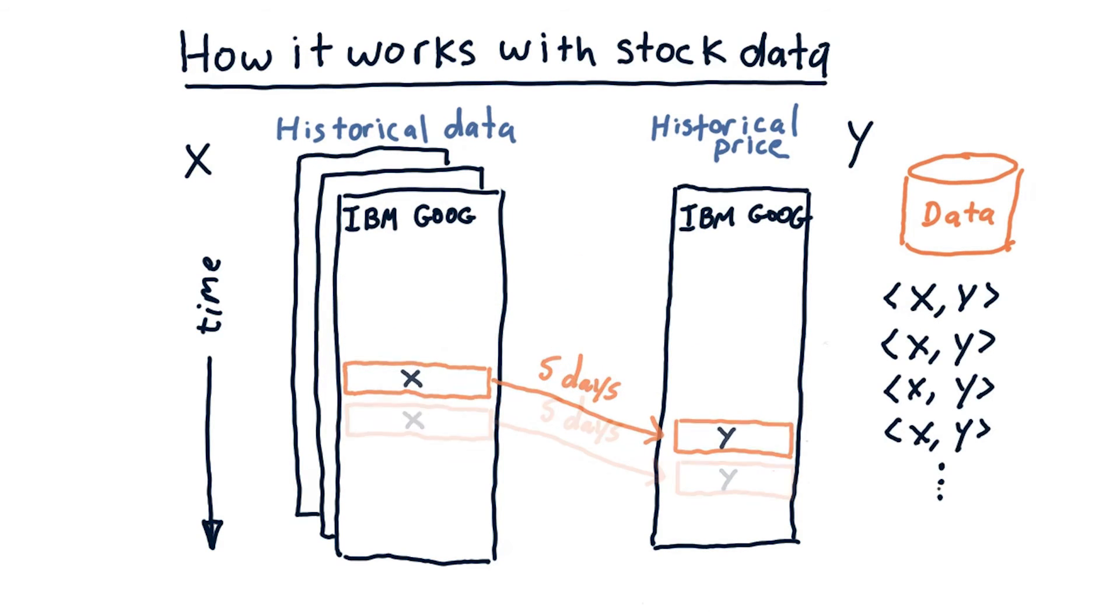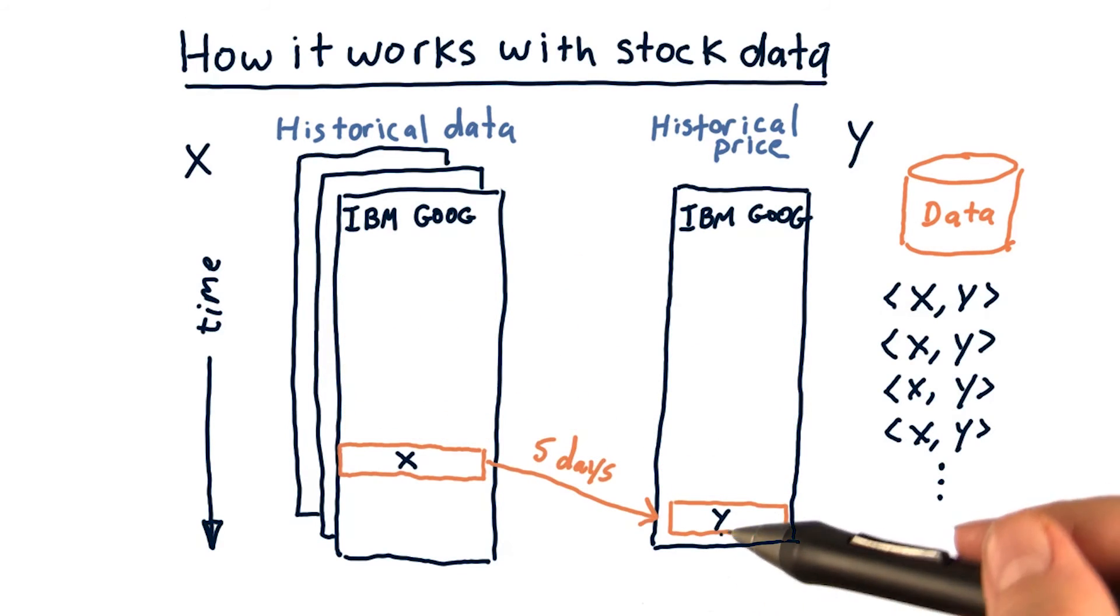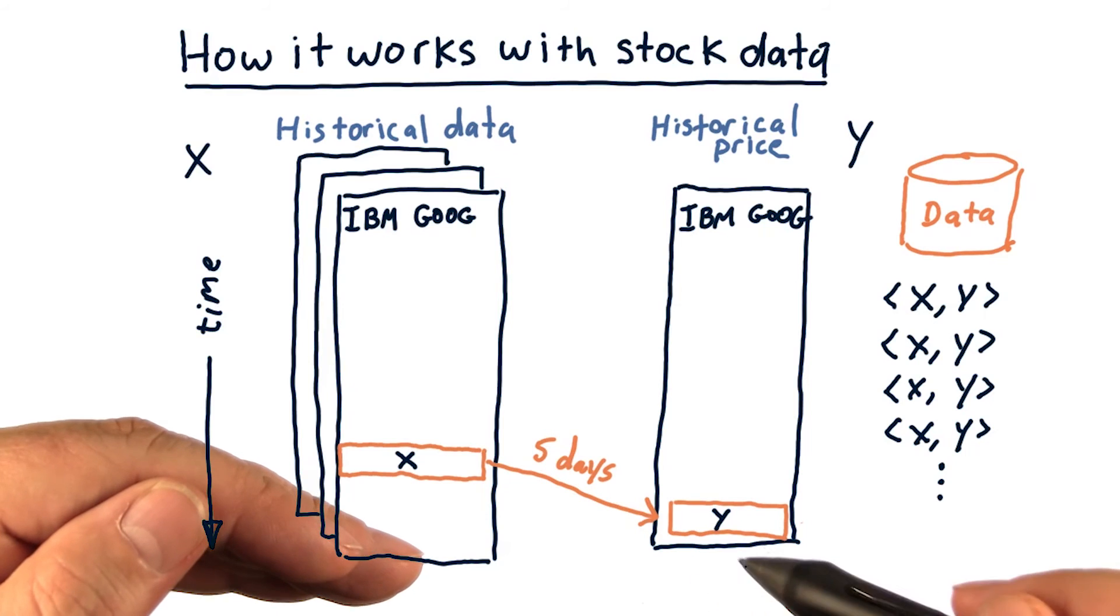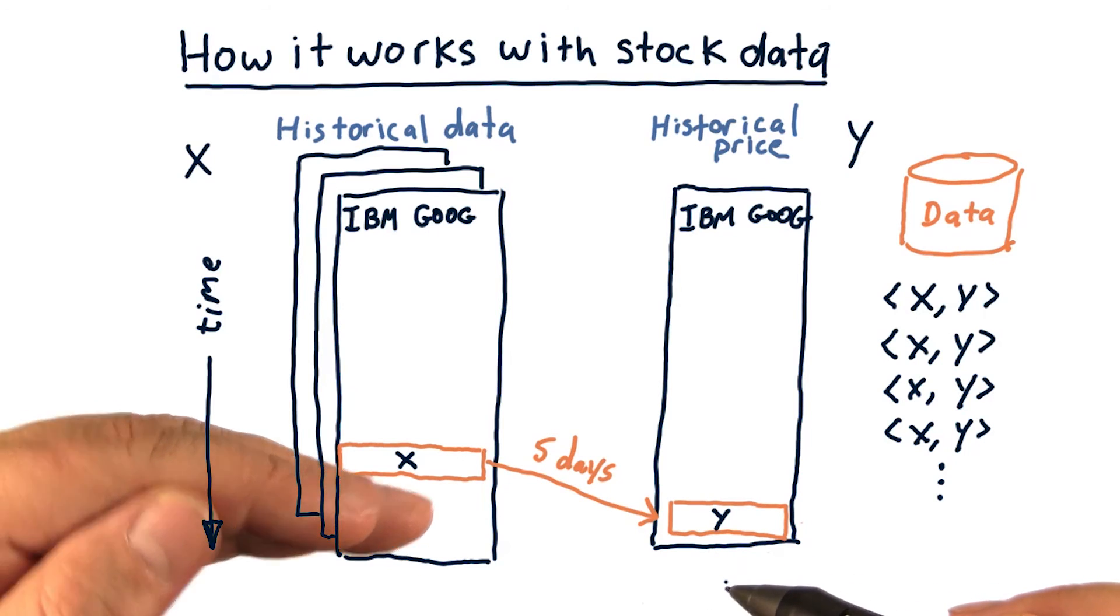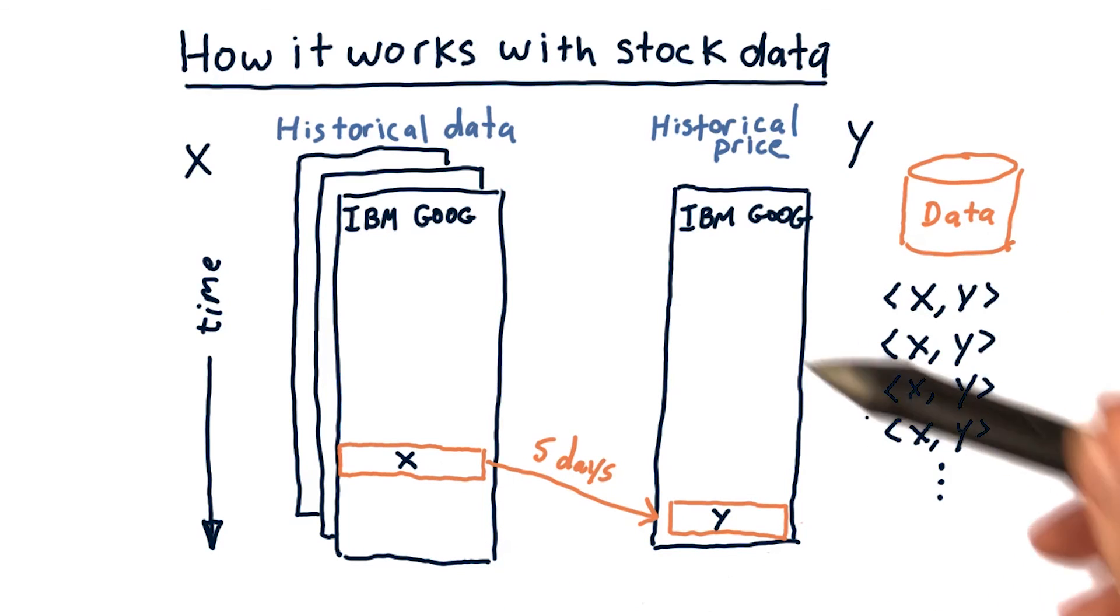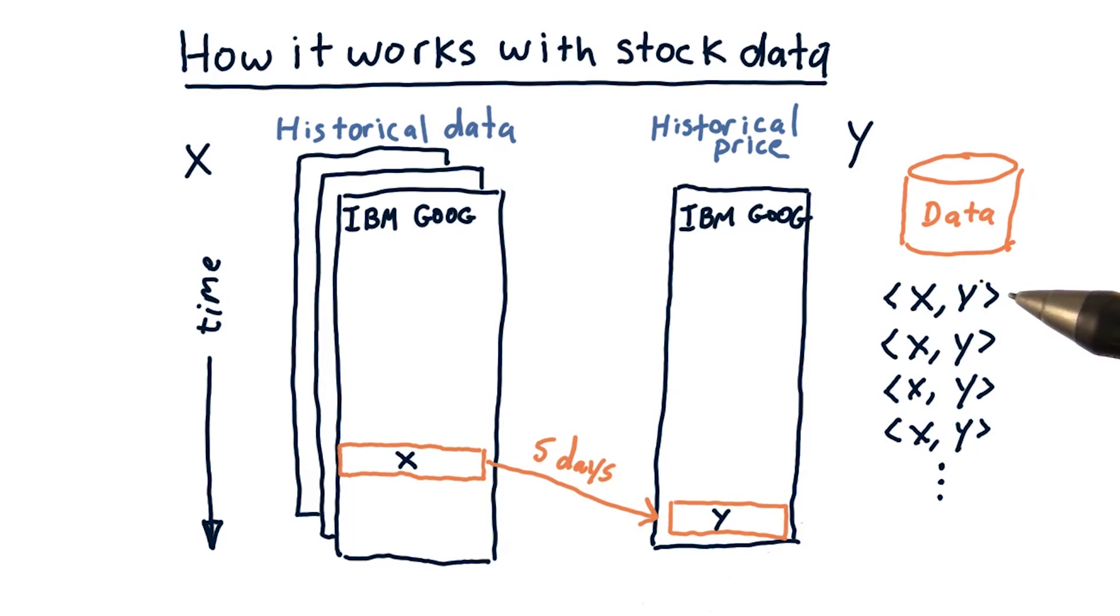Eventually, we reach a point where we can't go any further because there's no more y data. In other words, if we went one day past this, y would be out here in the future. So we don't have that data to use, and that means we've got some leftover x data. In any case, we now, for each of these days in history, have a pair of x's and y's that we can feed into our database to build our model.